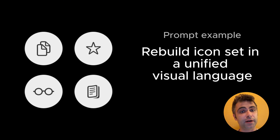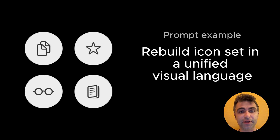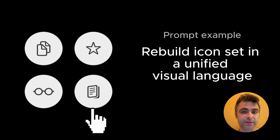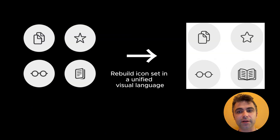Let's focus on one particular attribute of UI – icons. NanoBanana is great at creating a consistent set of imagery. So if we have a set of icons with one or two icons that don't feel right, like the icon for bookmark in this example, we can ask NanoBanana to fix this.